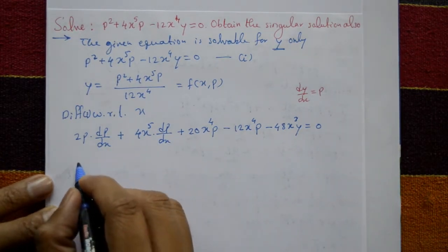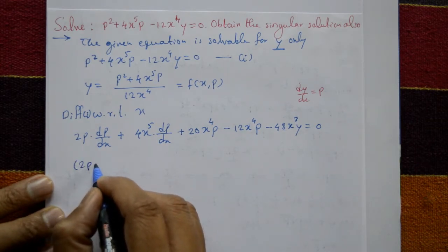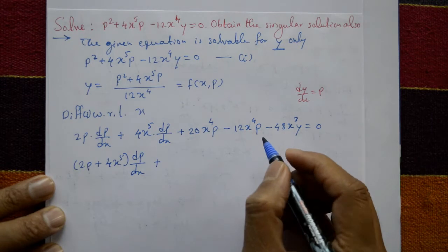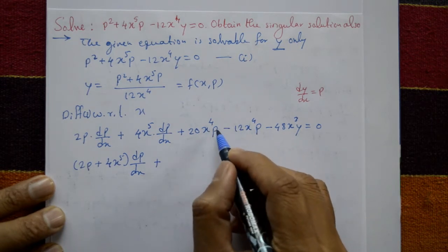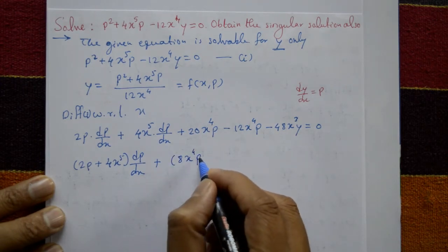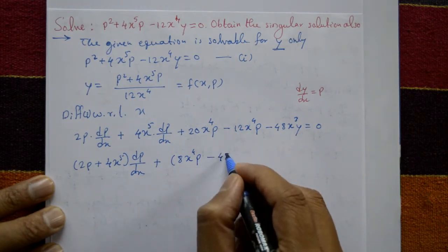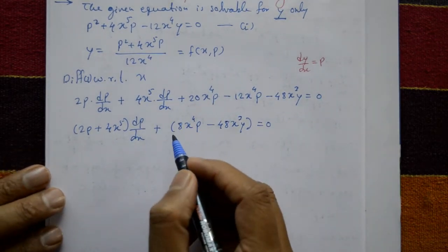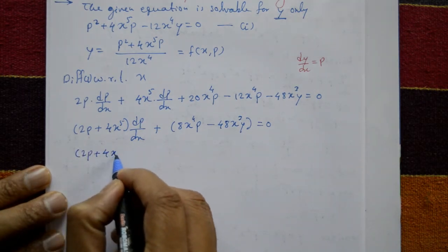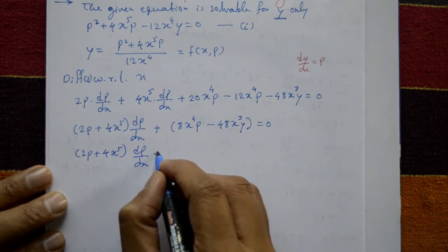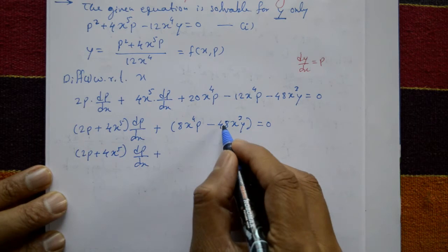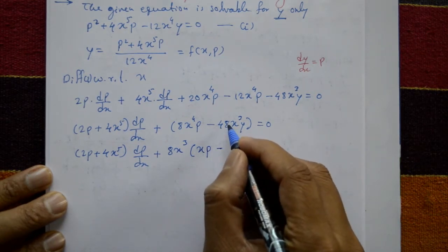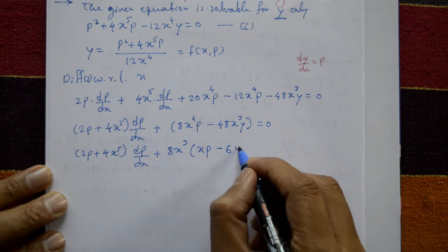Now separate the dp/dx terms on one side: 2p plus 4x to the 5 times dp/dx, plus — combining 20 minus 12 — 8x to the 4 times p, minus 48x cubed times y equals 0. Take 8x cubed as a common factor: the equation becomes 2p plus 4x to the 5 times dp/dx, plus 8x cubed times (xp minus 6y) equals 0.